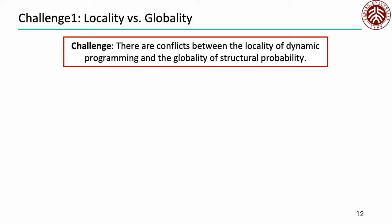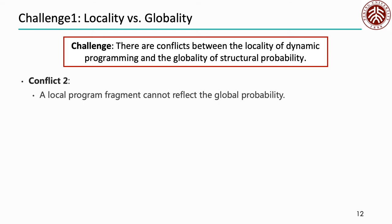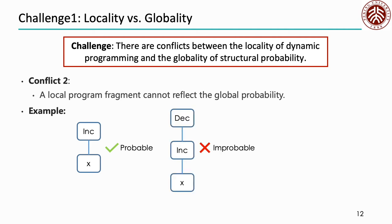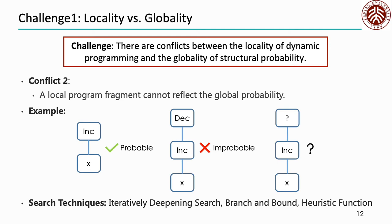The second conflict is that a subproblem represents only a local program fragment, and it is hard to distinguish improbable programs only on program fragments. For example, expression increasing x itself is probable but becomes improbable in decreasing-after-increasing x. Therefore, it is unknown whether program fragment increasing x is probable or not. We involve three search techniques to make MaxFlash efficiently prune search states: iteratively deepening search, branch and bound, and heuristic function.